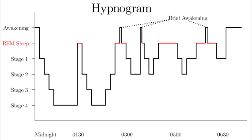What is the mnemonic to help remember all the EEG waveforms? The mnemonic is: at night, bats drink blood. B is for beta — awake with eyes open. A is for alpha — awake with eyes closed. T is for theta — stage N1. S is for sleep spindles and K complexes — stage N2. D is for delta — stage N3. And B for blood is beta in REM sleep.